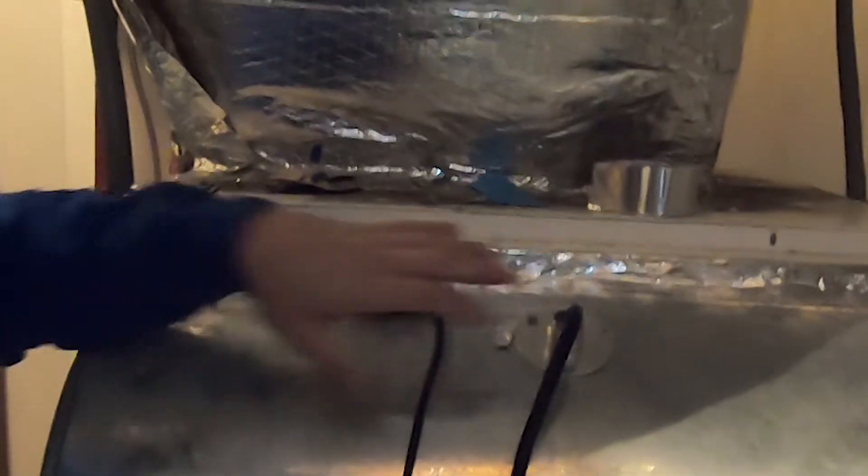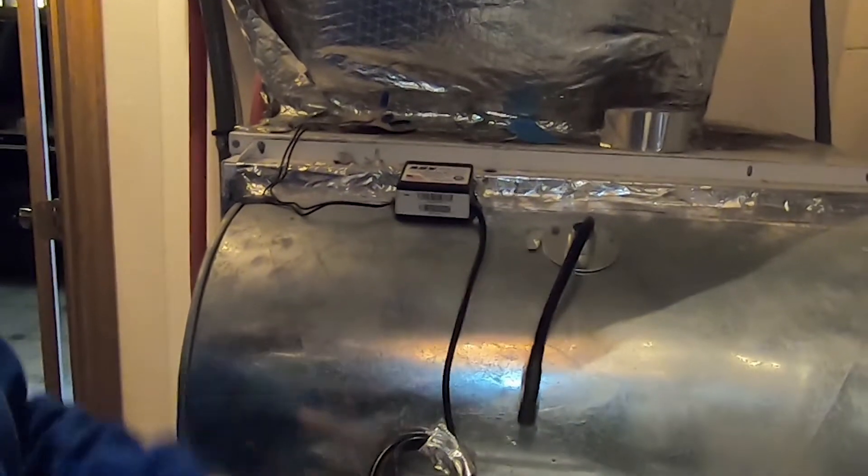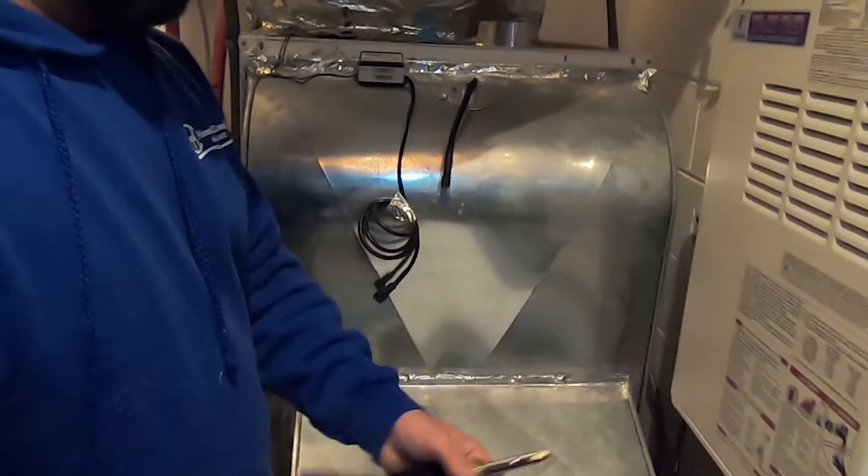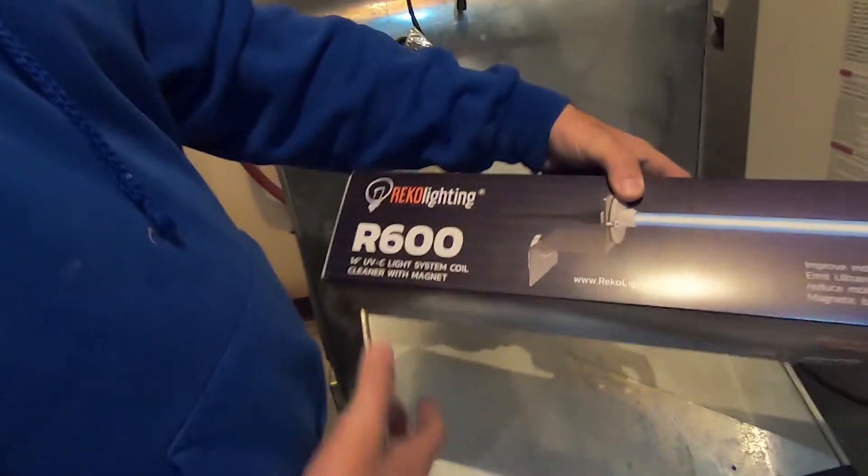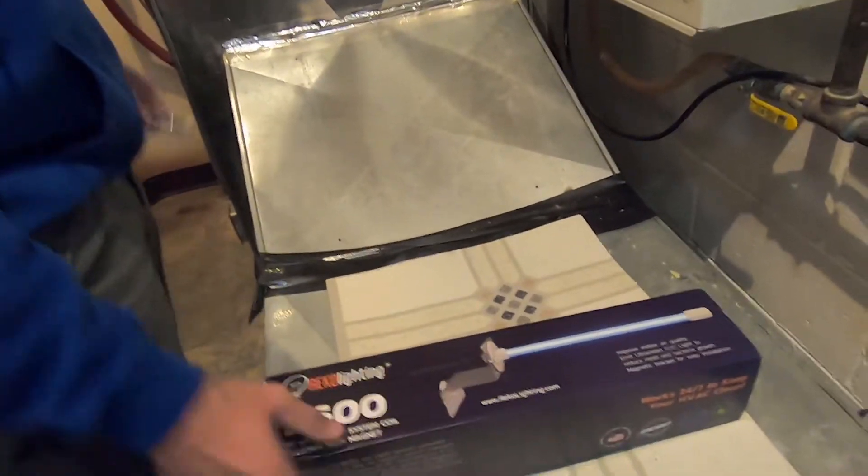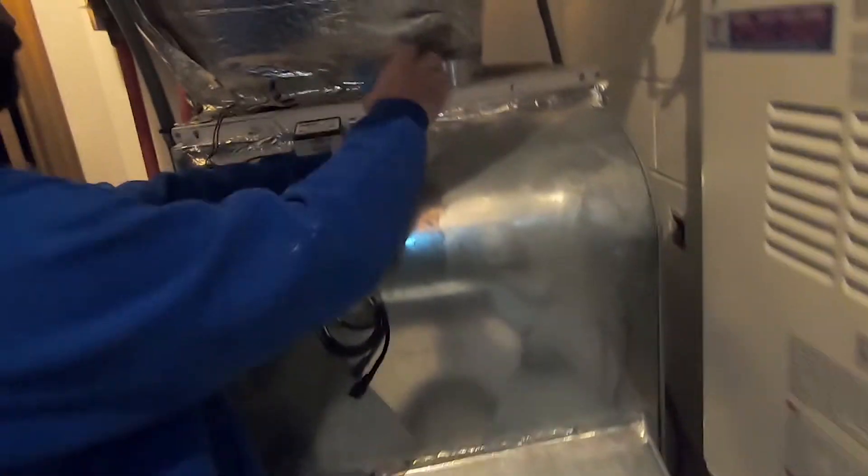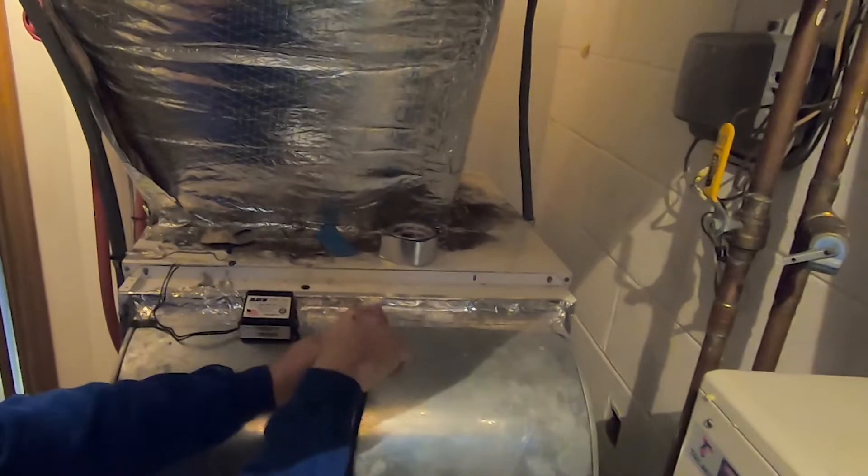So what we're doing, we're just replacing a UV light today. Couldn't find a replacement bulb for this, so we just got a whole new light fixture. They're relatively inexpensive and easy to replace. We're just going to start out by removing this one. Already got the power disconnected to it.